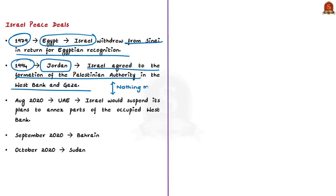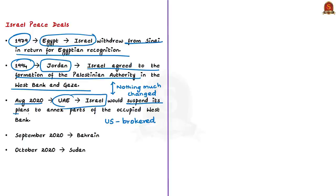In August 2020, a peace deal was signed between Israel and the United Arab Emirates, brokered by the United States. As per this deal, the UAE and Israel would establish formal diplomatic relations, and in exchange, Israel would suspend its plans to annex parts of the occupied West Bank. Then in September 2020, Bahrain and Israel signed a peace deal, also brokered by the USA.